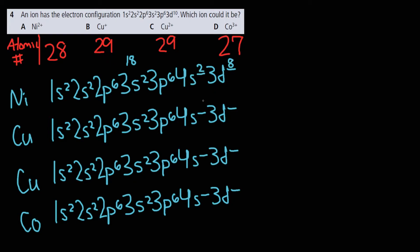For copper (Z=29), we want 11 more electrons, but copper has a special case: it's more stable with 4s1 3d10 rather than 4s2 3d9, because a half-filled s sub-level and a fully filled d sub-level is more stable. For cobalt (Z=27), we want 9 more, giving 4s2 3d7.